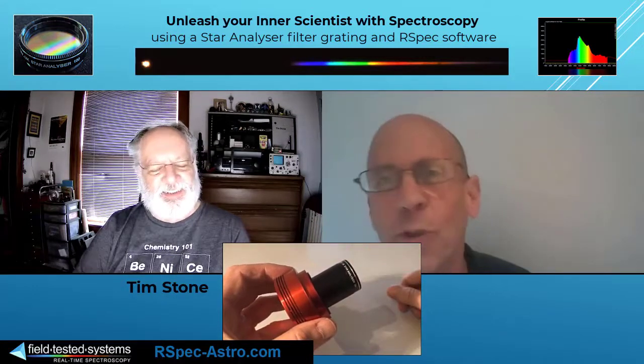Tim, what was the first spectrum you captured and what was it like? The first spectrum I captured was Vega. I put the grating on the camera, I pointed it at Vega, I took a picture, and there was a spectrum, and I was blown away. I was instantly hooked. I couldn't wait to start taking more spectrums of more stars.